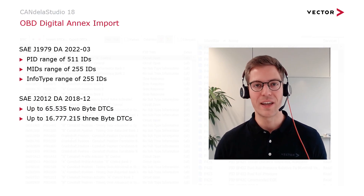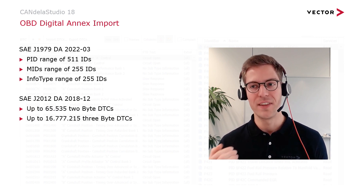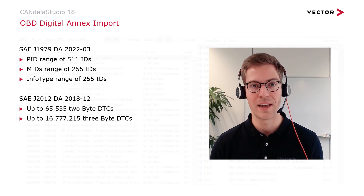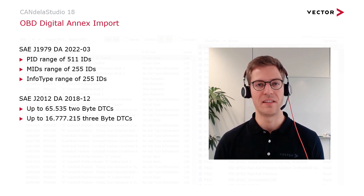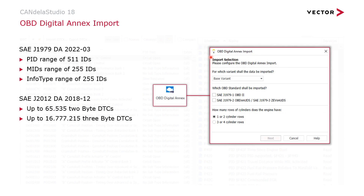Today I report about a new feature of Candela Studio version 18 — the digital NX import functionality. With Candela Studio 18, we provide our tool users an OBD digital NX import functionality, and with this we can relieve our users of a large part of their work in the specification of OBD2, OBD on UDS, and ZDV on UDS data and DTCs. A lot of OBD data and DTCs are standardized that used to have to be specified manually. Candela Studio 18 eases this process. Now OBD data and DTCs can be imported from the relevant document — from the SAE J1979 digital NX document and from the SAE J2012 digital NX document.